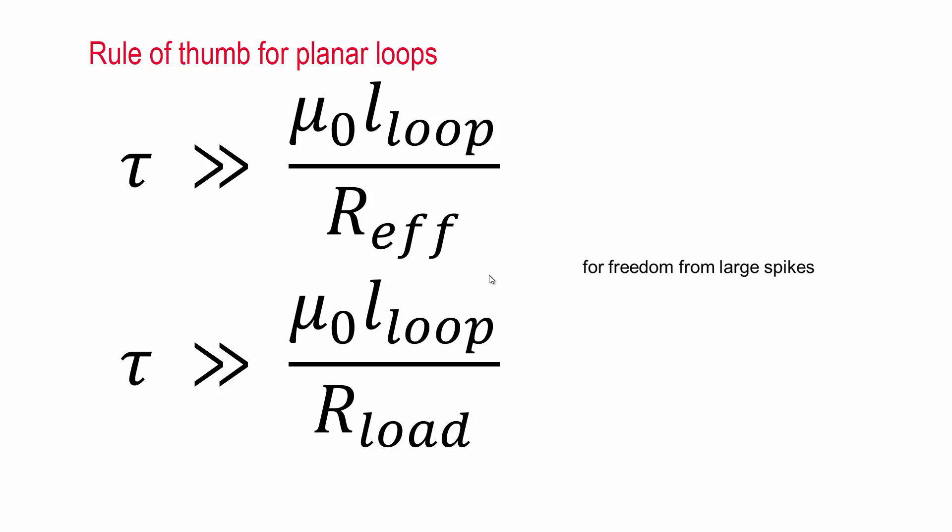If you don't have R_effective, as I mentioned in the beginning, you can use R_load instead, it's about the same thing. In that case, the rise time must be much greater than the permeability of free space, the loop length divided by R_load.